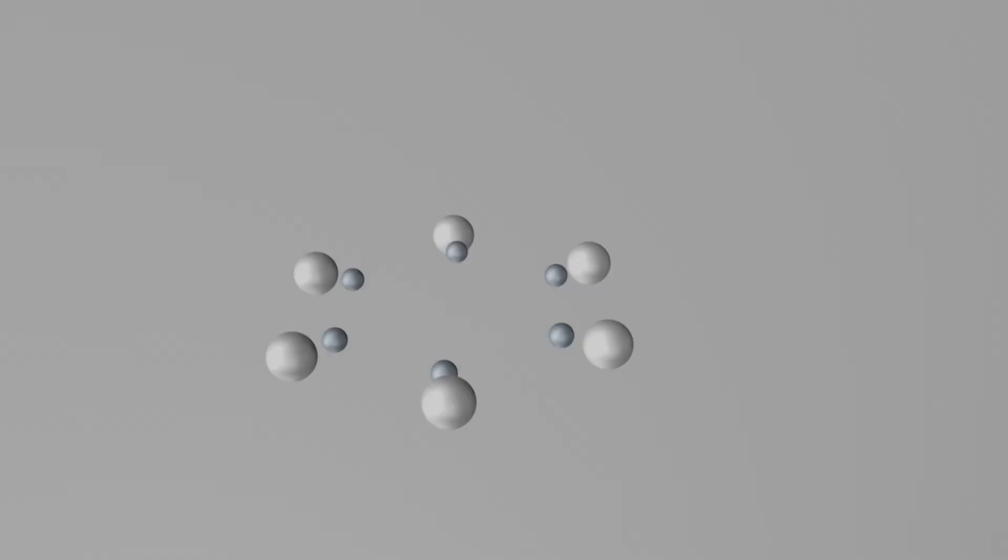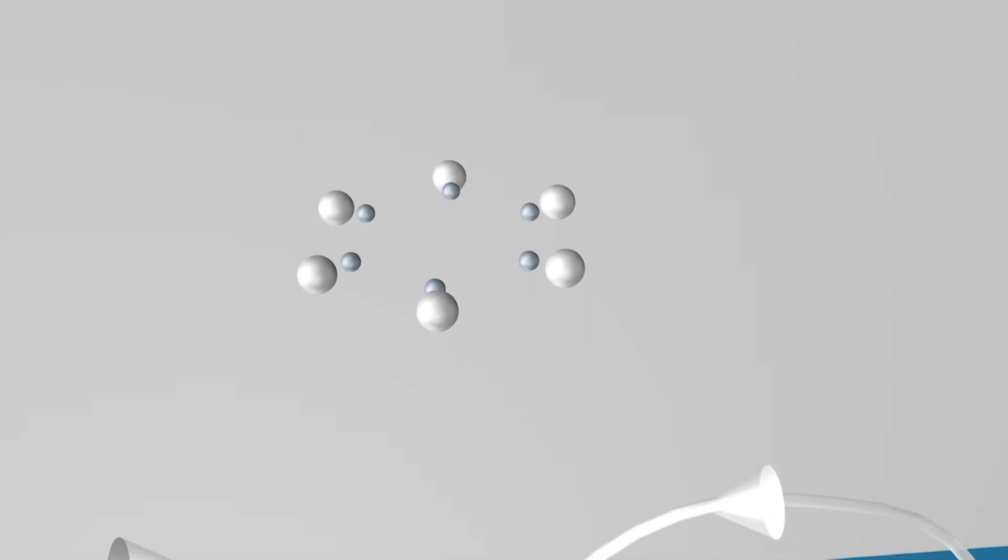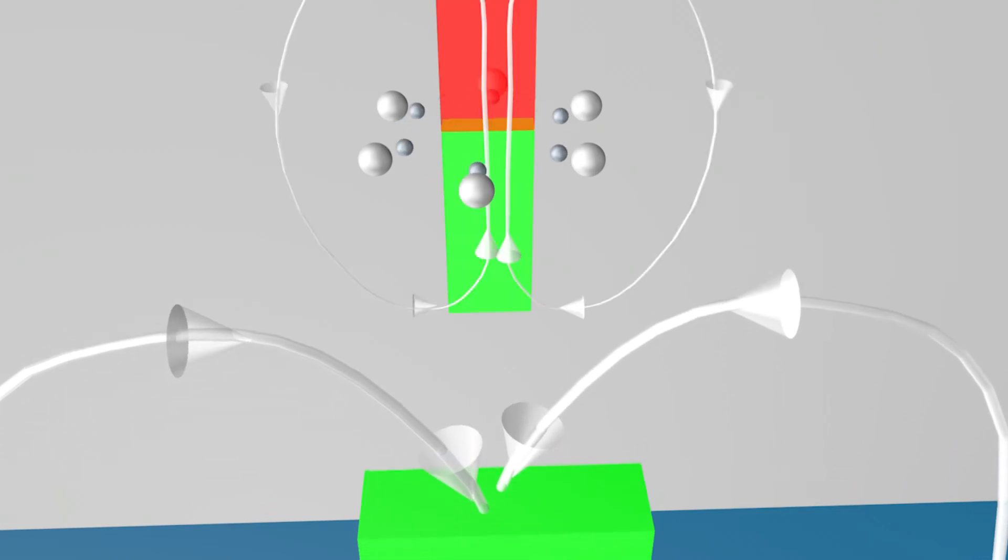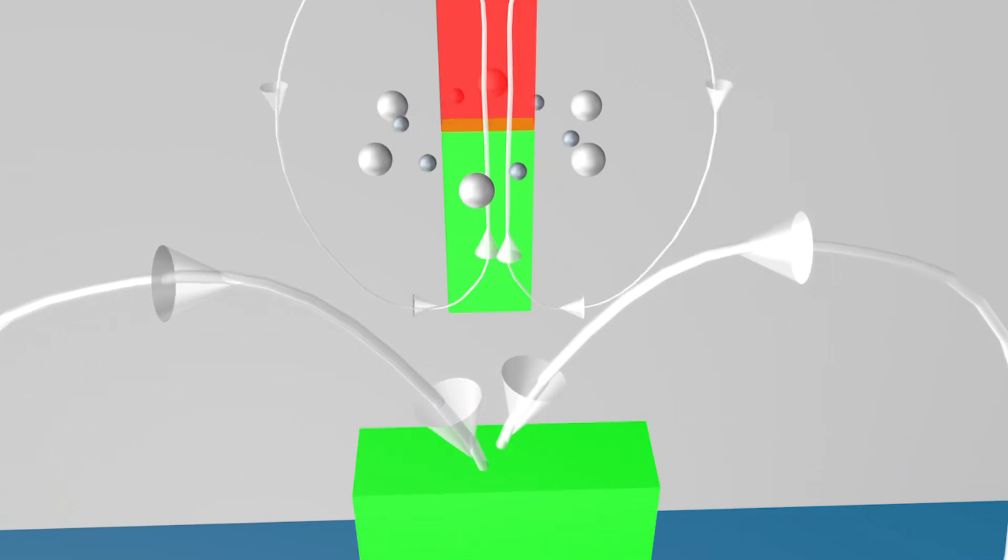These are so-called pi electrons. An external magnetic field now ensures that these pi electrons form circular currents. The direction is such that the circular currents form a magnetic field that is opposite to the external magnetic field.